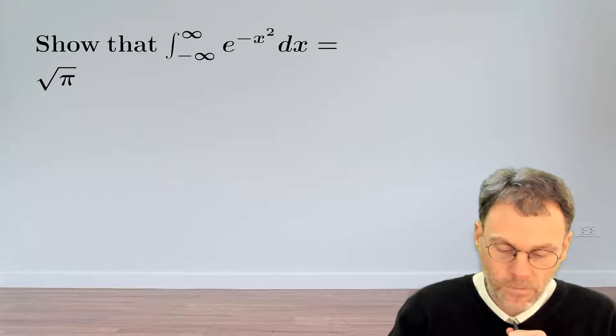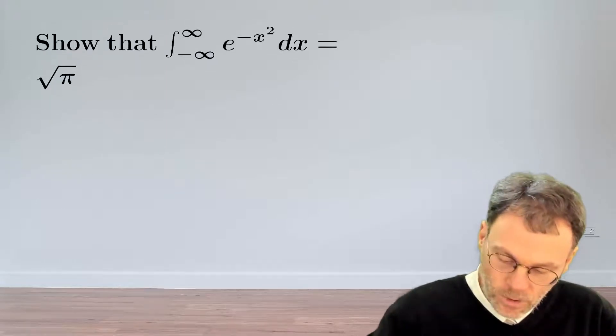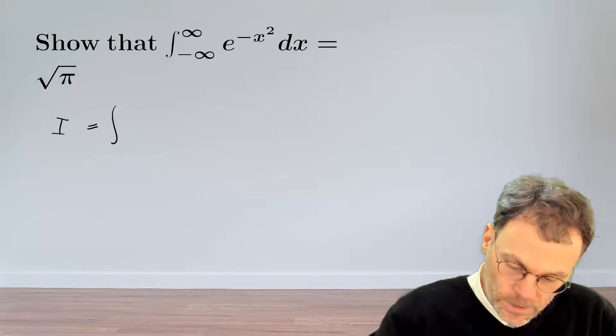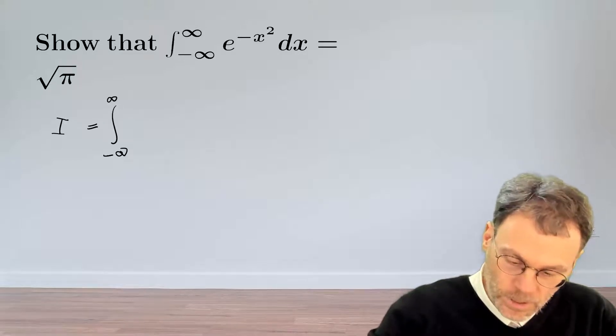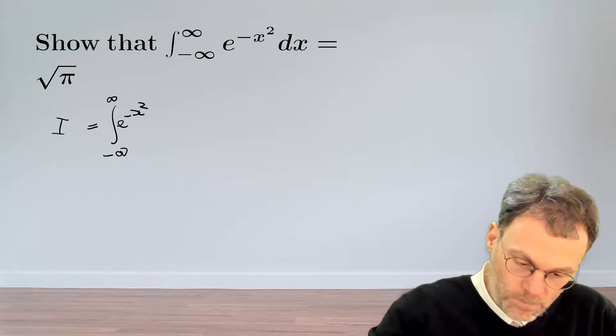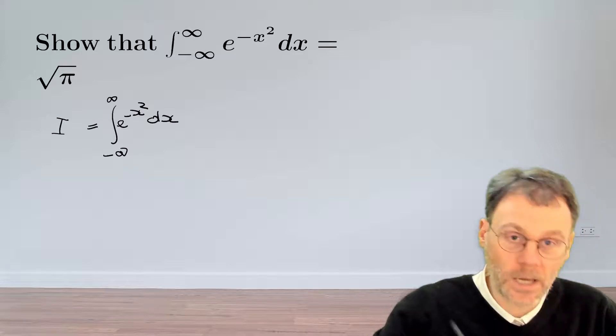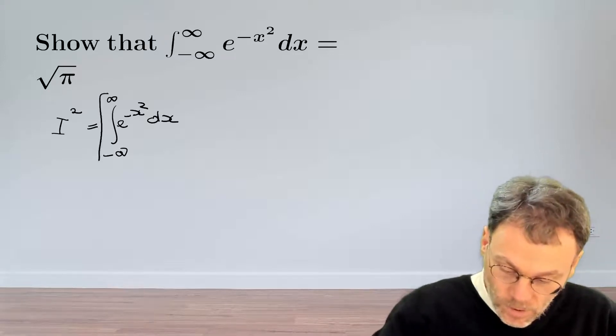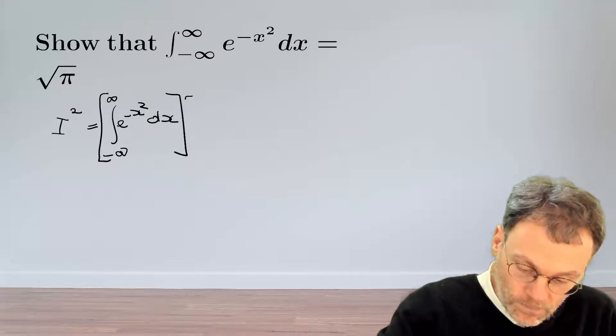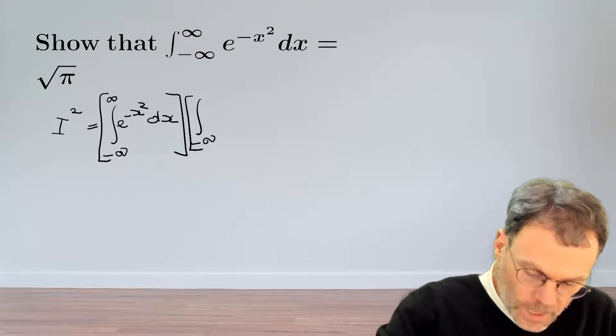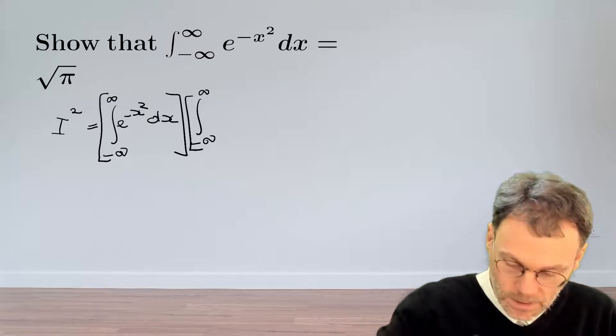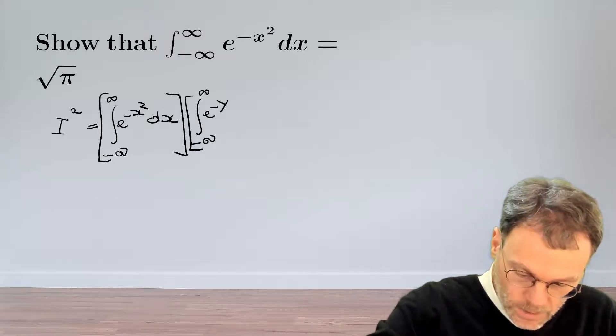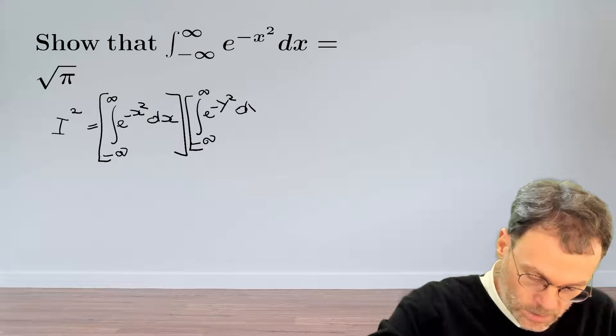So the hint is the following. Rather than calculating the integral that we're interested in, namely the integral from minus infinity to plus infinity exponential minus x squared dx, we're going to calculate the square of that integral, so we're going to multiply the integral by itself. And then just for fun, rather than writing x here, we're going to write y, so exponential minus y squared dy.